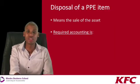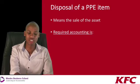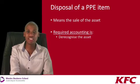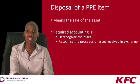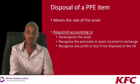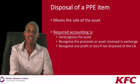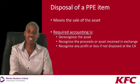The accounting treatment required for the sale or de-recognition of an asset is, first and foremost, to de-recognise the asset — eliminating it out of our books, getting rid of it within our financial records. We do so by also recognising the proceeds that we would have received in exchange for the asset, or the asset received in the case of a barter transaction.